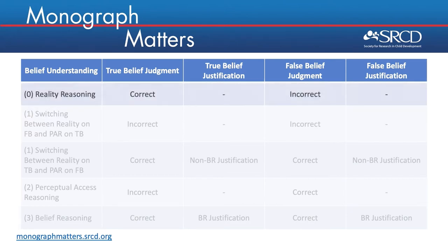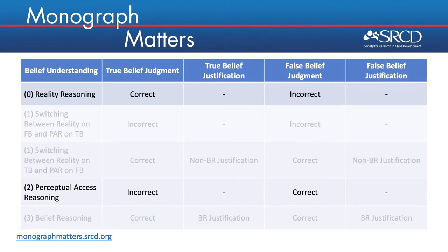With reality reasoning, children will provide a correct judgment on the true belief task but provide an incorrect judgment on the false belief task. Justifications in this pattern are not considered, but often involve referring to the actual contents of the box. With perceptual access reasoning, children provide an incorrect judgment on the true belief task and a correct judgment on the false belief task. Justifications are not considered in this pattern, but usually involve referring to the other person's lack of perceptual access to or knowledge of the box's actual contents.